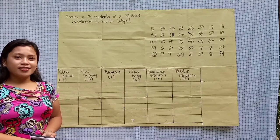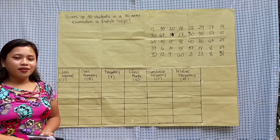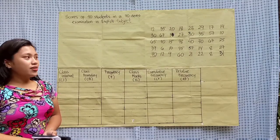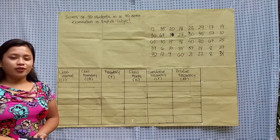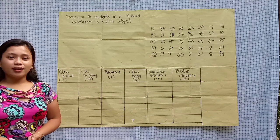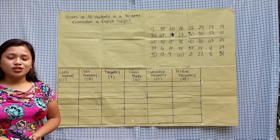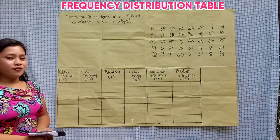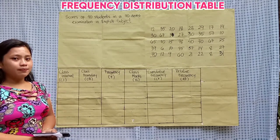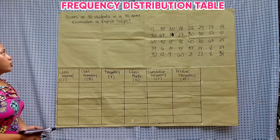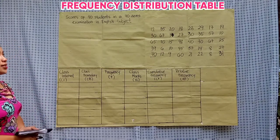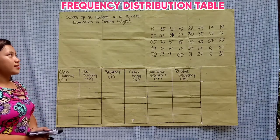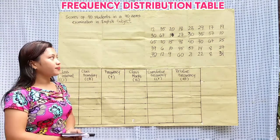Hi everyone, I am Chesseline G. Loviano from BPA1D. This is my tutorial on how to make a frequency distribution table. I have here an example of a set of data: scores of 40 students in a 70-item examination in English subject.